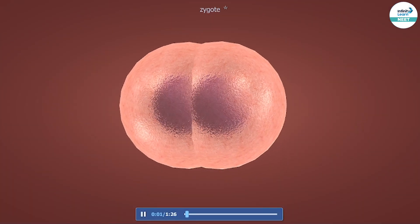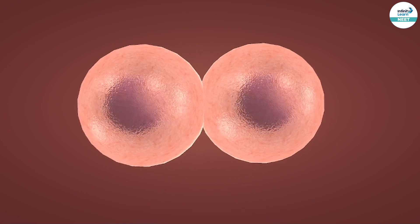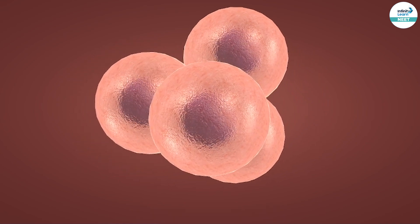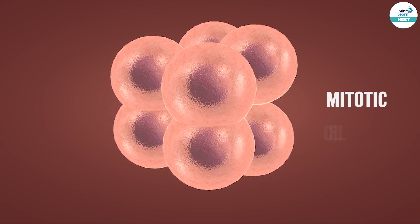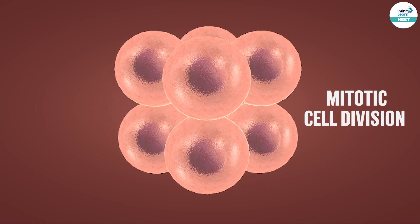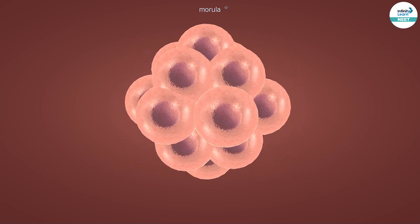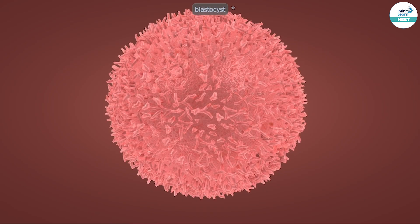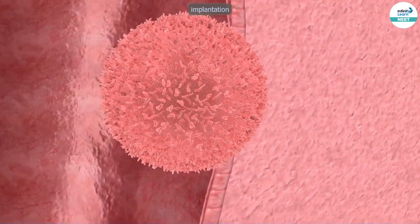In this screen you can clearly see how, after the fusion of sperm and ovum, zygote formation takes place through various cell divisions. Once a cluster of cells is made, it becomes the morula, and then the later stage comes, which is the blastocyst.